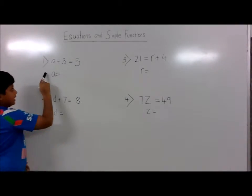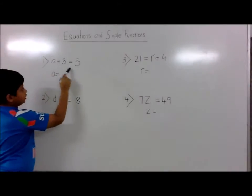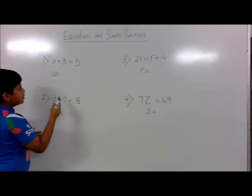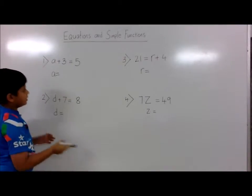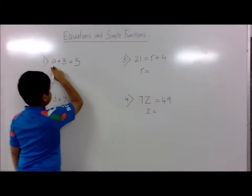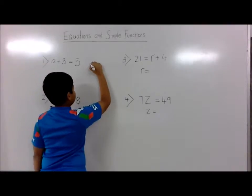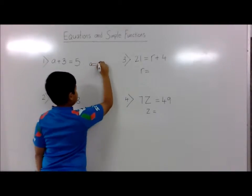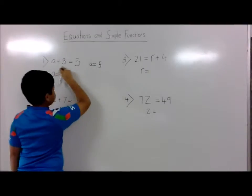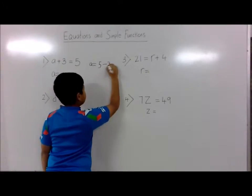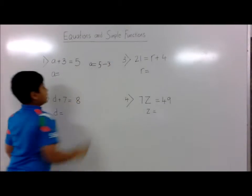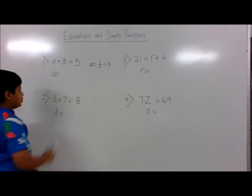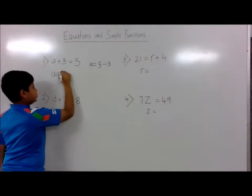First question: a plus 3 is equal to 5. Put the variables on the left side and the numbers on the right hand side. You solve this by putting a is equal to 5, and 3 becomes minus 3. So a is equal to 5 minus 3. 5 minus 3 is 2, so a is equal to 2.